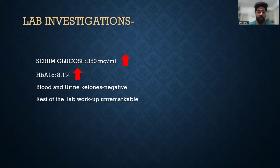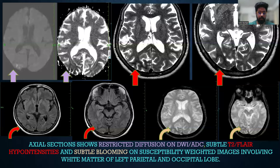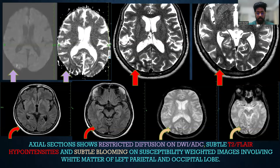On lab investigations, serum glucose was raised, HbA1c was raised, blood and urine ketones were absent, and rest of the lab work was unremarkable. NCCT brain showed no significant abnormality. On MRI, we saw restricted diffusion on DWI-ADC, subtle T2 FLAIR hypointensities, and subtle blooming on FFE images involving the white matter of left parietal and occipital lobe.